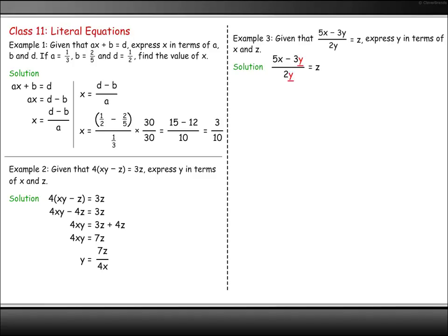Get the term with y in it on its own. This occurs in two places. Multiply both sides by 2y to get rid of the fraction. Bring all the terms with y in it to the right-hand side. Factorize the right-hand side by taking out y in common. Divide both sides by the bracket (2z + 3) to get y on its own.